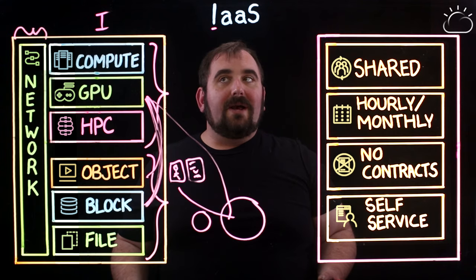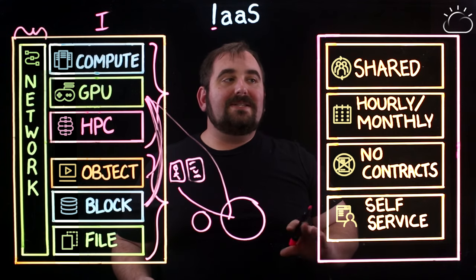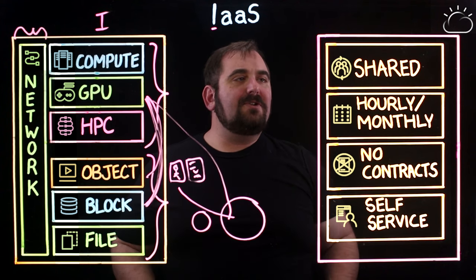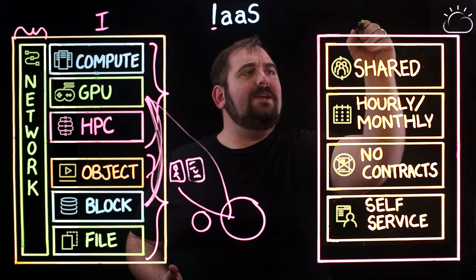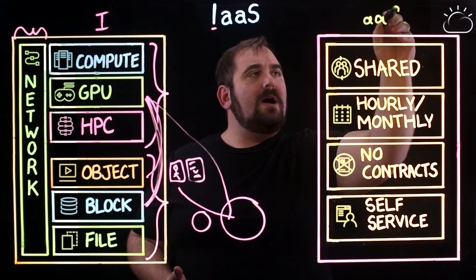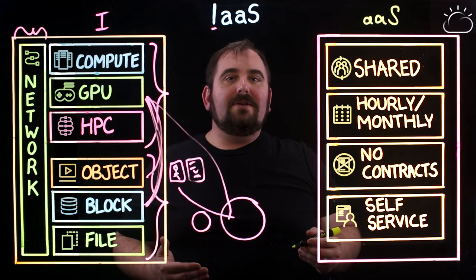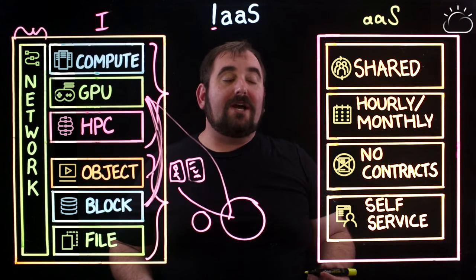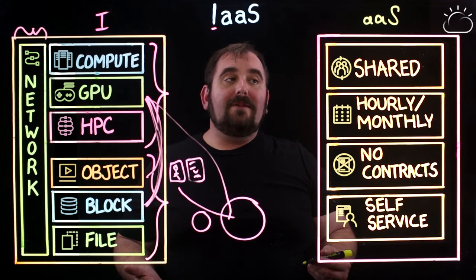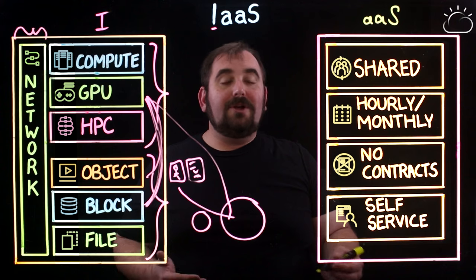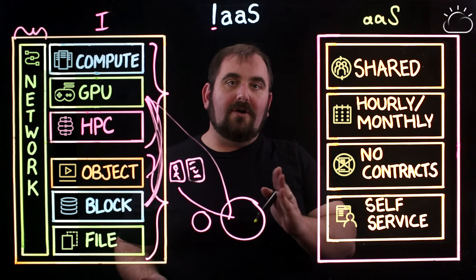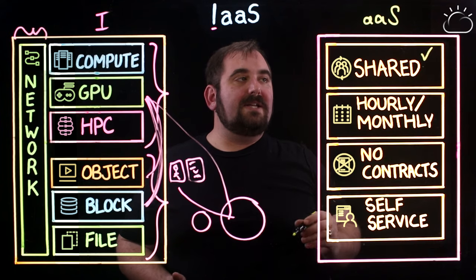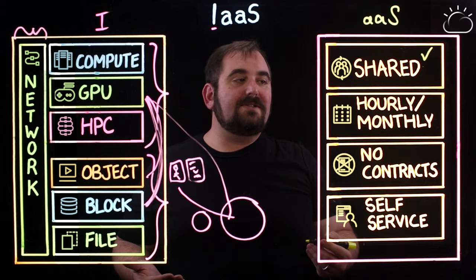The second piece I want to talk about is the as-a-service piece — this is the way that you consume. When we talk about as-a-service, there are four things that really matter. The first is that offerings consumed as-a-service are generally speaking shared — they're multi-tenant. Many people use the same offering; we carve it up and make it available to multiple different customers simultaneously.